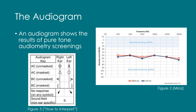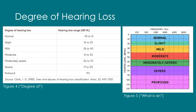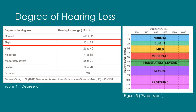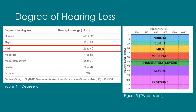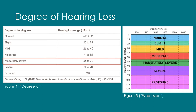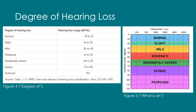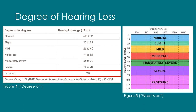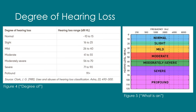Now that we have learned how to read an audiogram, let's discuss how to interpret the data. Figure 4 is a chart from ASHA that breaks down degrees of hearing loss, or HL. Negative 10 to 15 dBHL falls under normal hearing. 16 to 25 dBHL represents a slight hearing loss, although some organizations include 16 to 25 dBHL in normal hearing. 26 to 40 dBHL is a mild loss, 41 to 55 dBHL is a moderate loss, 56 to 70 dBHL is a moderately severe loss, 71 to 90 dBHL is a severe loss, and 91 plus dBHL is a profound hearing loss. You can also see this breakdown represented in Figure 5.